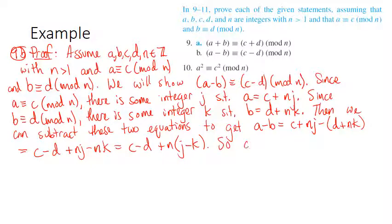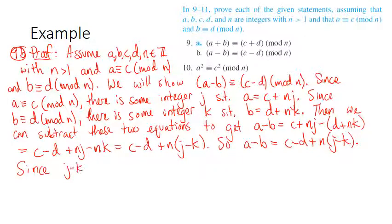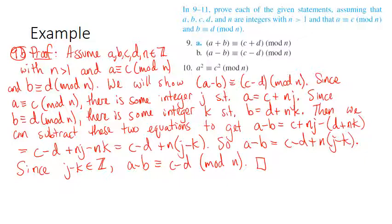It's not too tricky as long as you can use that equivalent form — when you have a modular congruence, you get a regular equation where you have the value plus n times some integer. Now let's do number 10 in pretty much exactly the same way.